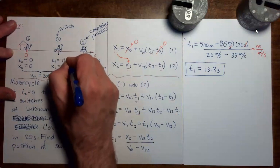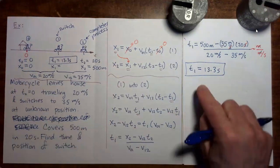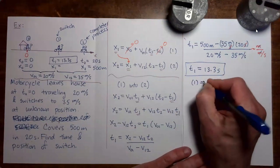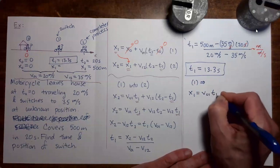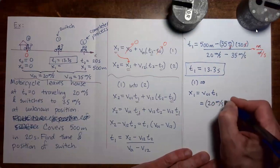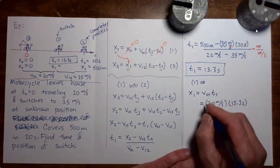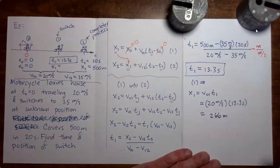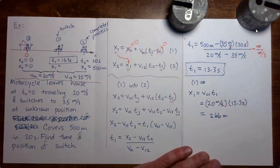We're going to put t1 equals 13.3 seconds back into the original figure. Now we want to find x1, and we can get x1 by putting t1 back into equation one. Using equation one: x1 equals v01 times t1, which is 20 meters per second times 13.3 seconds. Putting that into the calculator gives 266 meters — although if you carried extra digits in the intermediate steps, it will probably come out to be 267 meters.